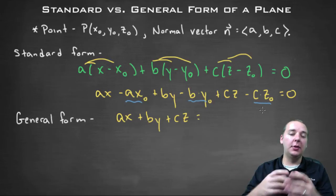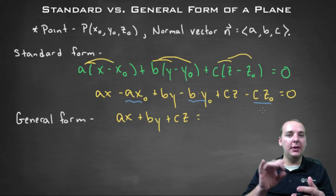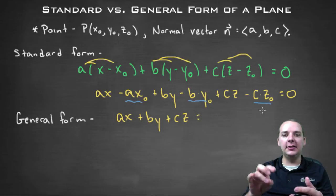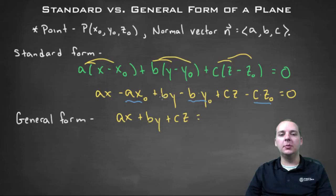Let's move those to the right hand side, because all of those are constants. A, b, and c, x-not, y-not, z-not, all six of those terms are constants. So on the right hand side, if you added them all, you'd have a x-not plus b y-not plus c z-not.